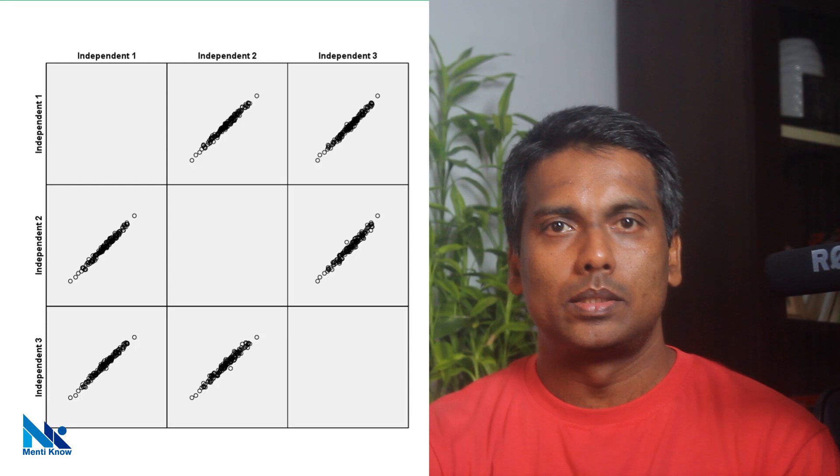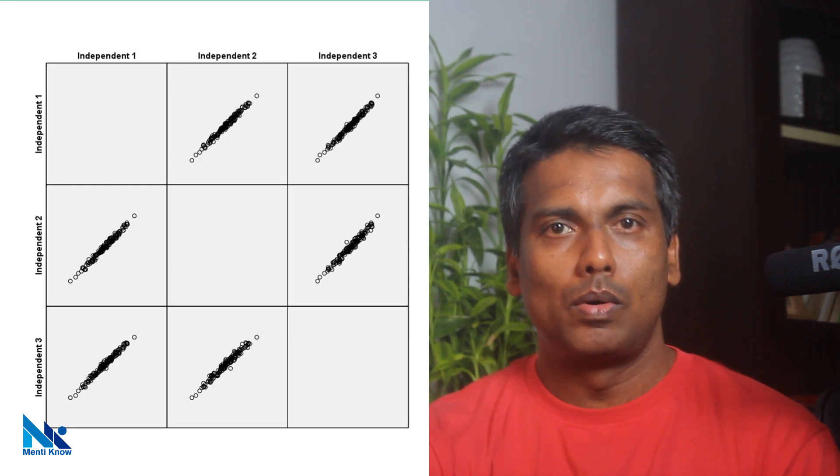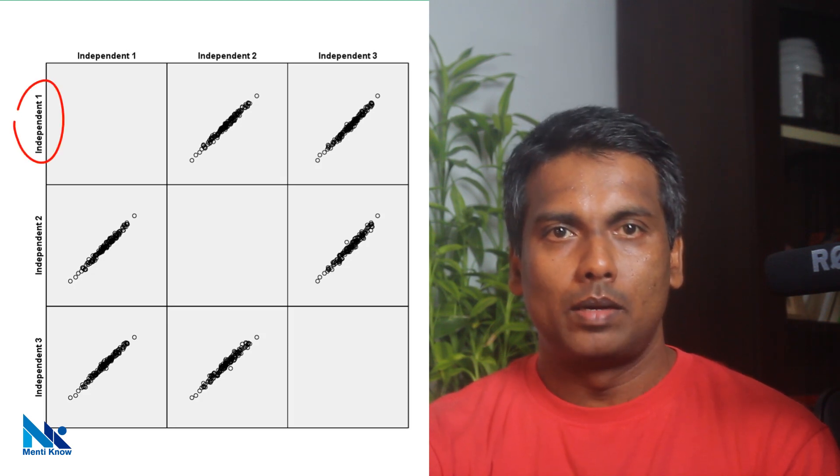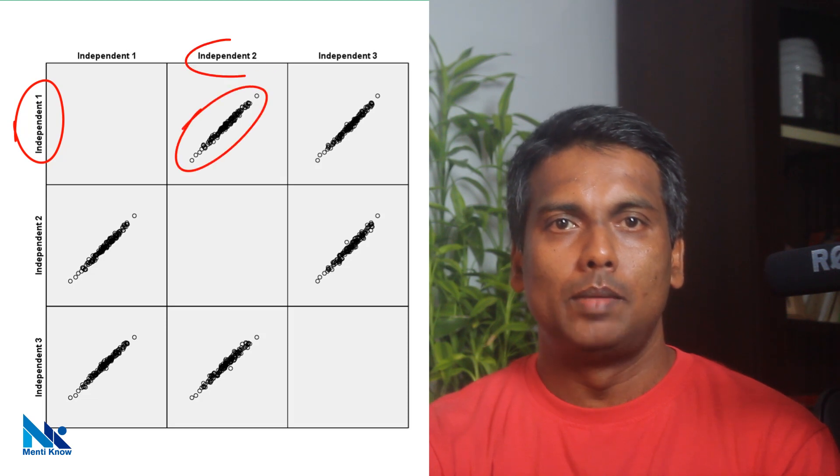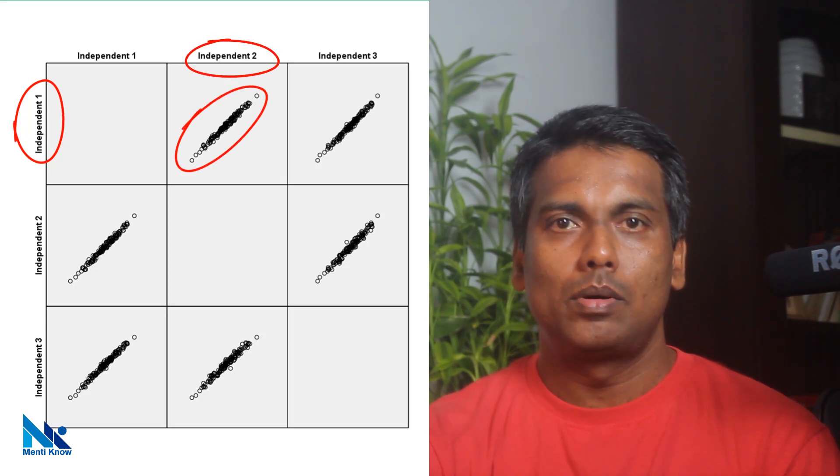This should not be confused with serial correlation or autocorrelation. Multicollinearity is a situation where two or more independent variables are correlated with each other. As the term suggests, independent variables need to be independent. If one independent variable is associated with another independent variable, then there is no independence.